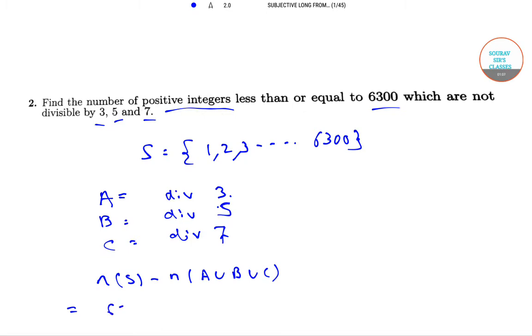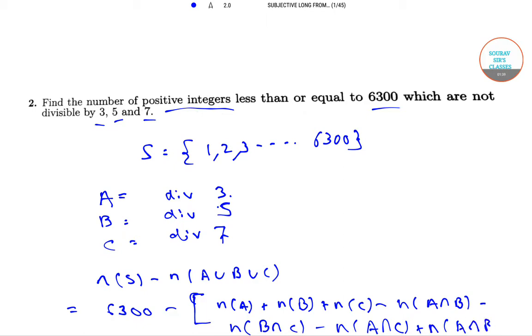This is equal to 6300 minus N of A plus N of B plus N of C minus N of A intersection B, minus N of B intersection C, and minus N of A intersection C, plus N of A intersection B intersection C.